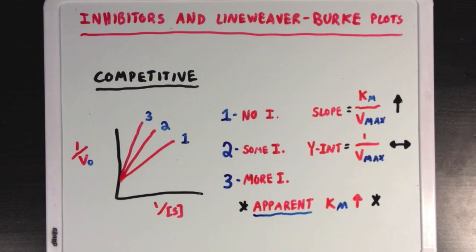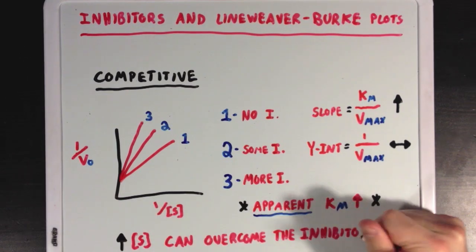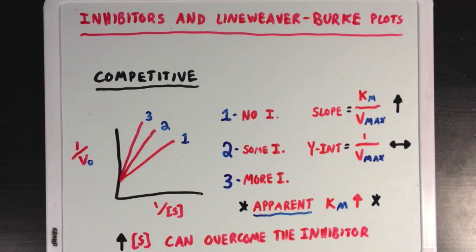But since the y-intercept isn't changing when you add a competitive inhibitor, you'll see that this competitive inhibitor has no effect on the enzyme's Vmax. So what that means is that competitive inhibitors will increase Km, but leave Vmax unchanged. Meaning that if you really increase the concentration of substrate, you'll overcome the effects of the inhibitor as you approach the enzyme's unchanged Vmax. But the enzyme may not be as effective at low substrate concentrations.